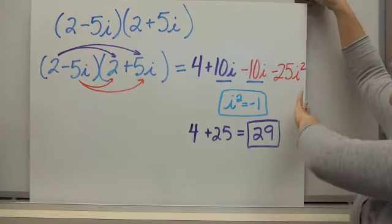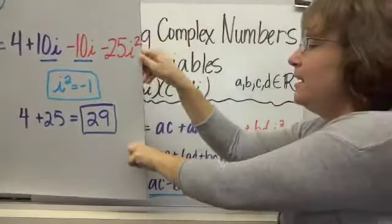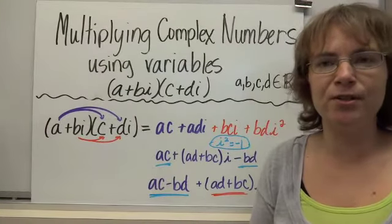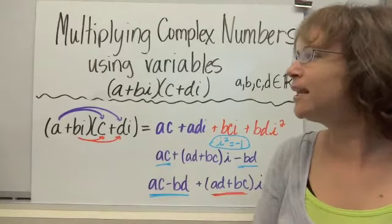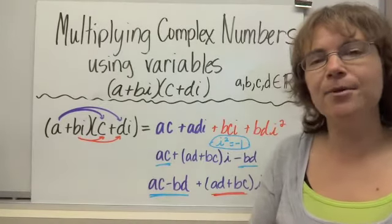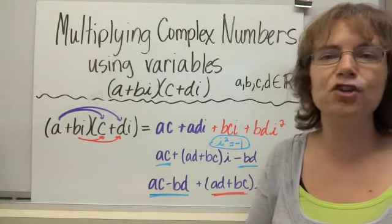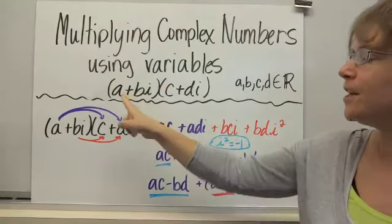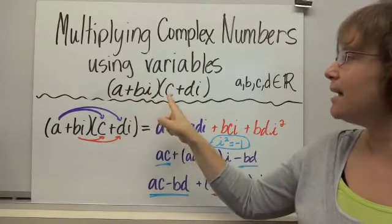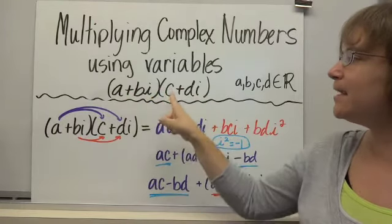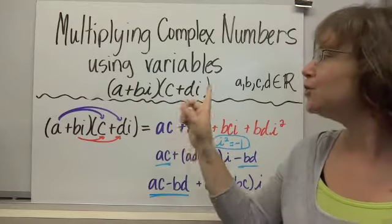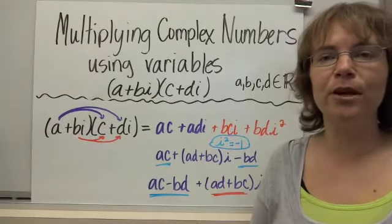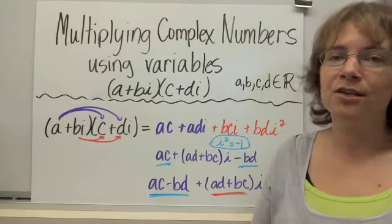Now let's look at what would happen if we used variables when multiplying complex numbers. Oftentimes in algebra we do this to prove something, but more importantly it lets us look at every case and have computers solve it for us. If we can write it in terms of variables, those variables can be any real number, and we can use that formula in a calculator or computer to solve any multiplication problem.